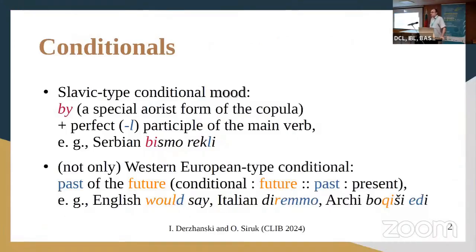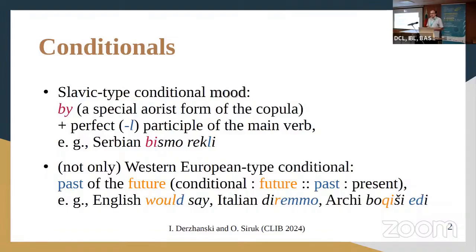Slavic languages have a grammatical category which is called a conditional mood. It is inherited from their common ancestors, so it is called that in every Slavic language. It's formed by a special aorist form of the copula that turned into a particle in some of the languages where it ceases inflecting for person and number, in combination with the perfect participle — the so-called L-participle of the main verb. This form exists with minor differences; in some languages it inflects, in others it does not for person and number. Generally it is part of the common heritage of Slavic languages.